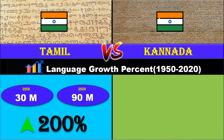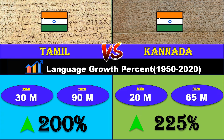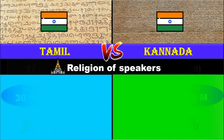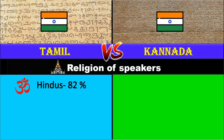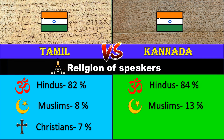Language growth percent between 1950 and 2020: Tamil grew 200%, Kannada grew 225%. Religion of speakers: Tamil speakers are 82% Hindu, 8% Muslim, and 7% Christian. Kannada speakers are 84% Hindu, 13% Muslim, and 2% Christian.